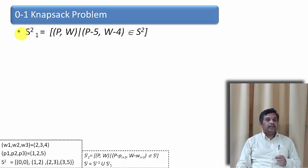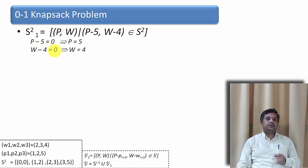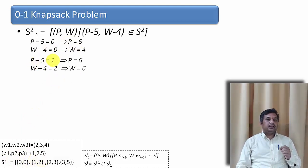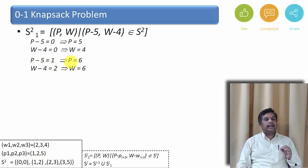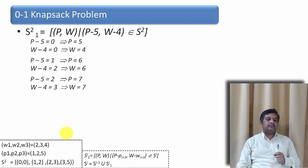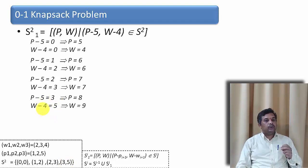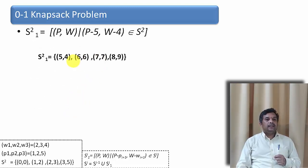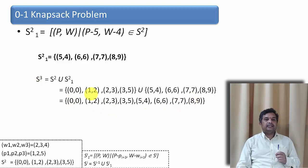For the third item, whose weight is 4 and profit is 5, S2 = {(0,0), (1,2), (2,3), (3,5)}. Applying the formula to each pair: (0,0) gives (5,4); (1,2) gives (6,6); (2,3) gives (7,7); (3,5) gives (8,9). So S2,1 = {(5,4), (6,6), (7,7), (8,9)}. Taking the union of S2 and S2,1 gives S3 = {(0,0), (1,2), (2,3), (3,5), (5,4), (6,6), (7,7), (8,9)}.